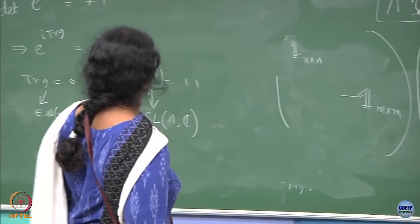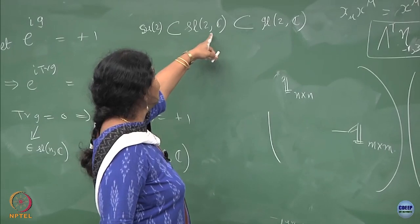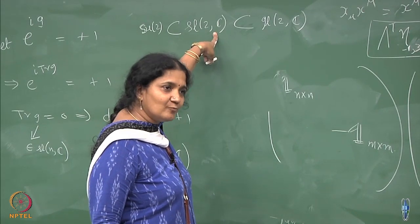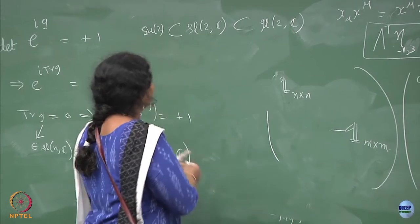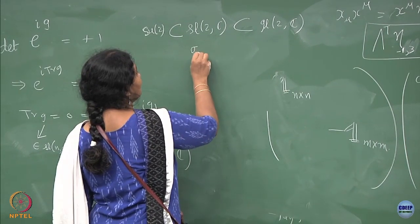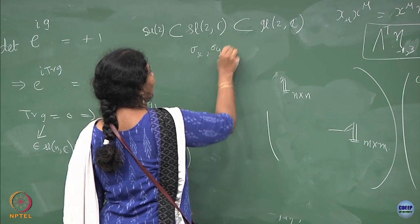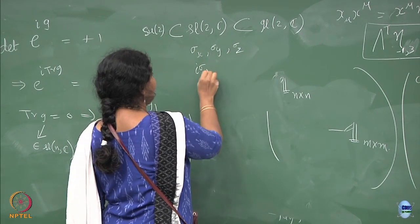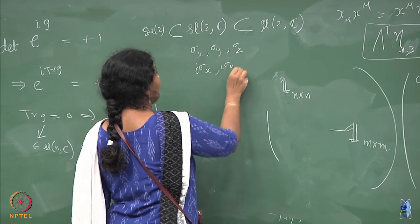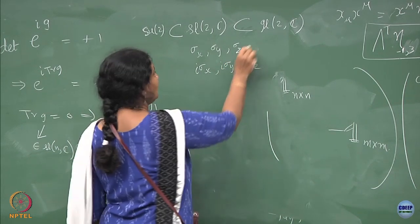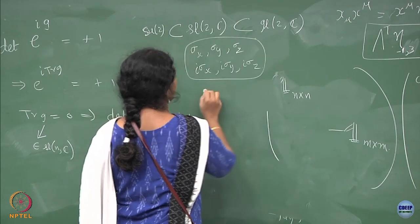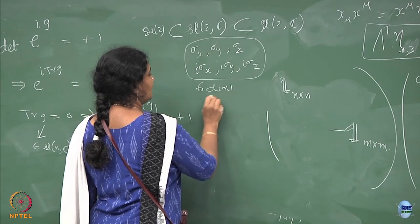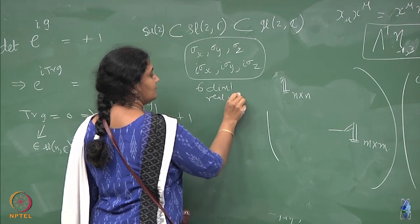SL(2,C) involves entries whose coefficients are complex. So you will have σ_x, σ_y, σ_z and also iσ_x, iσ_y, iσ_z — giving a 6-dimensional real vector space.